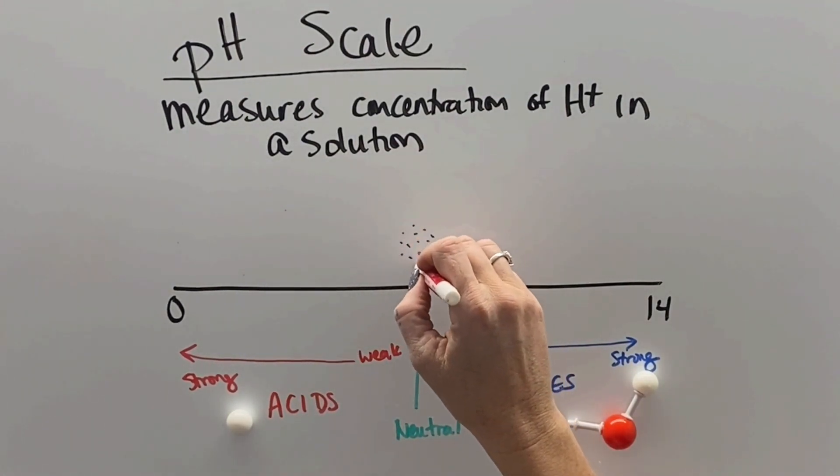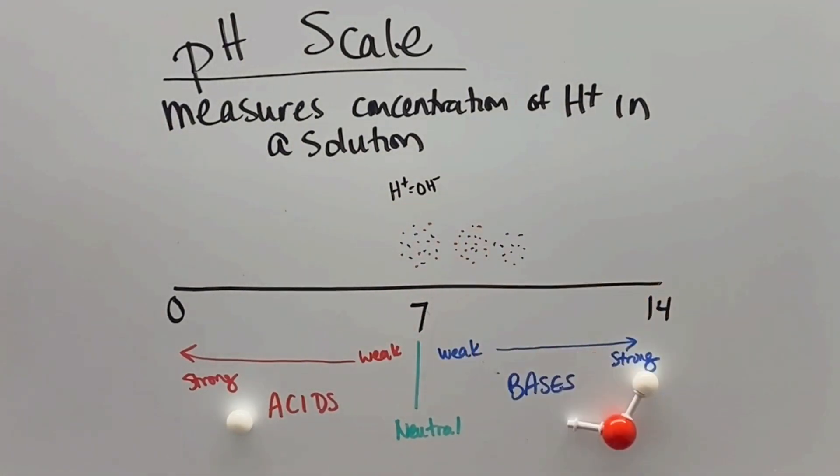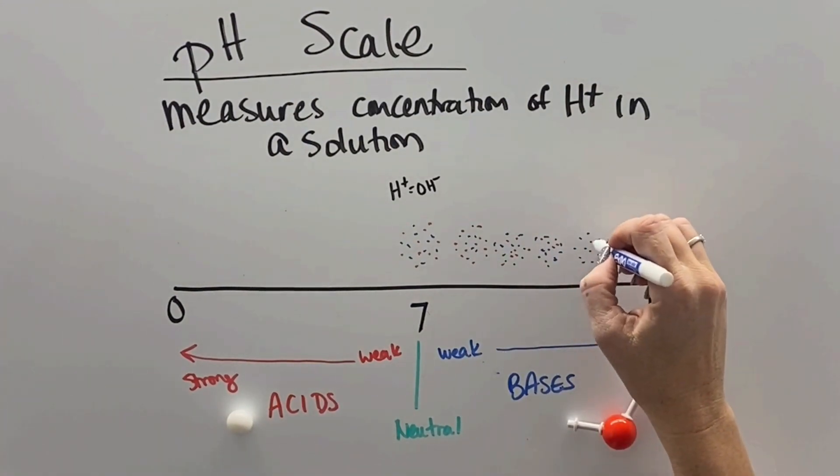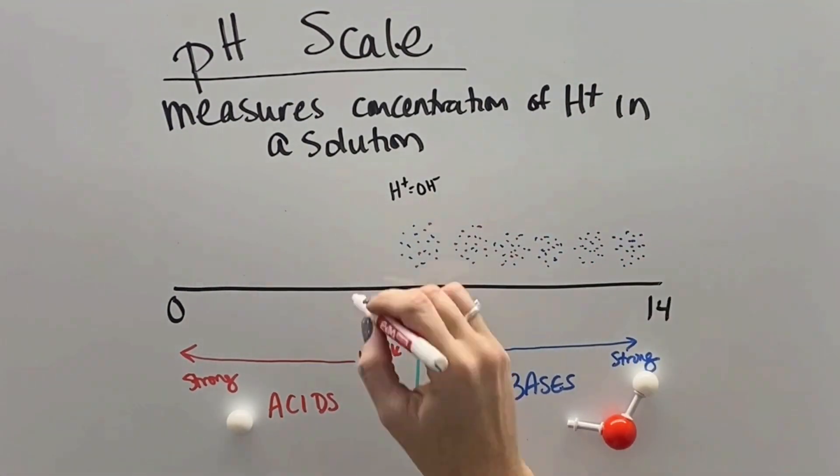That's because at 7, the number of hydrogens and the number of hydroxides are equal to each other. And so then as we start moving away from 7, the number of hydroxides start to increase in relationship to the hydrogens as you move up the scale for the bases.